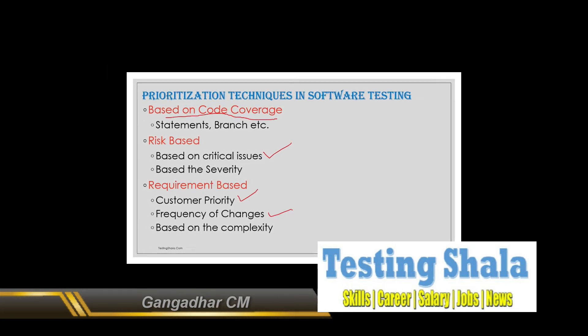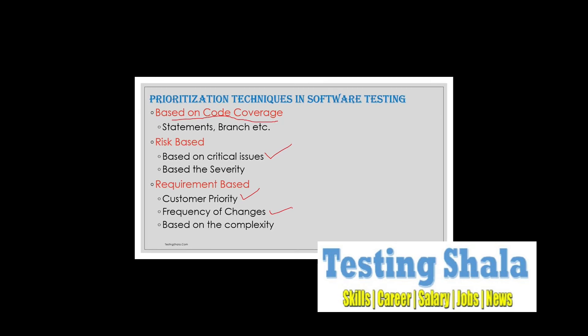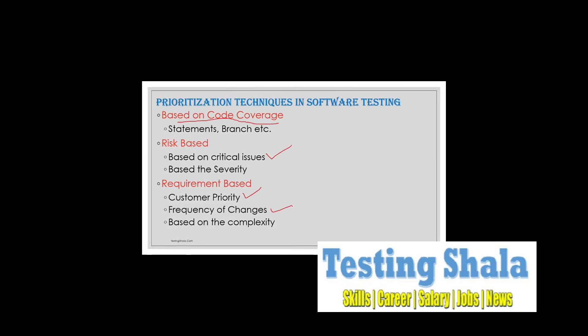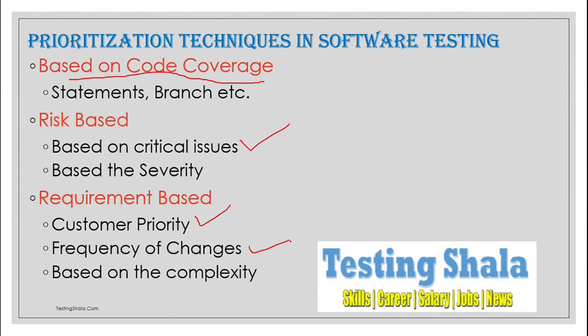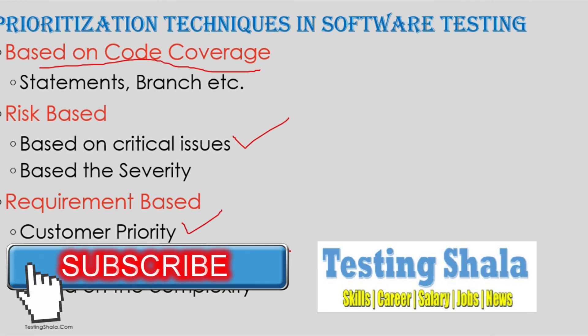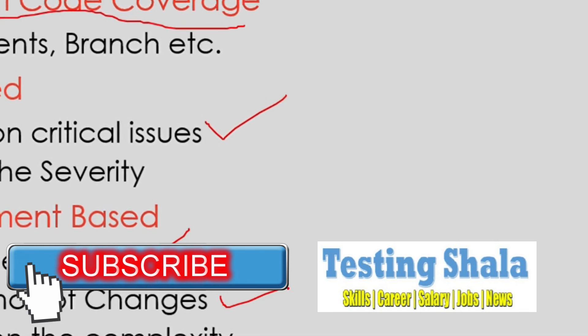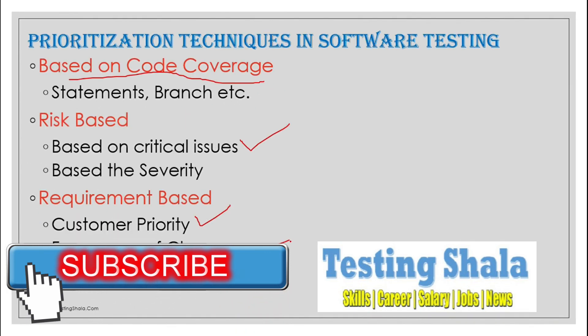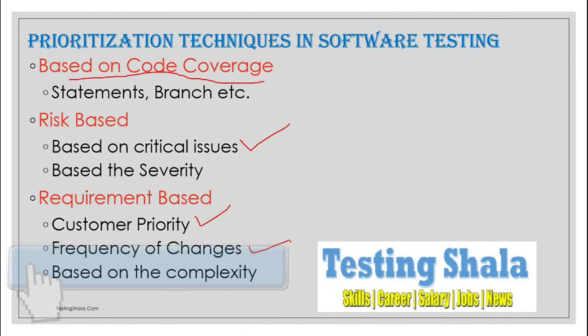We will test those requirements once they become stabilized or there are no more changes. Based on the complexity of the requirement, if certain requirements are very complex and not easy to understand, we park those for a later stage. Developers will need clarity first, and once they understand what the requirement is about, they will start implementing it.